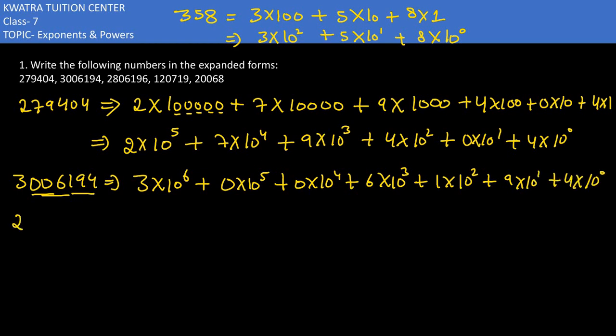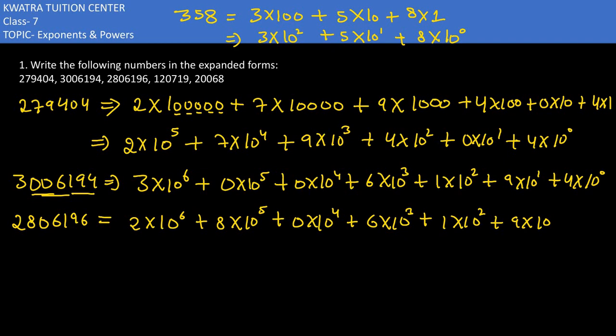Then you have 286196. 2 ke saath it would be 10⁶, then 8 ke saath 10⁵, 0 ke saath 10⁴, 6 ke saath 10³, 1 ke saath 10², then 9 into 10¹, then 6 into 10⁰.